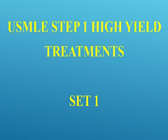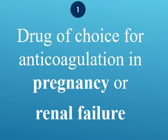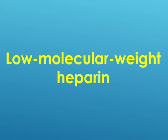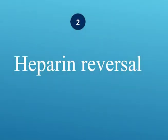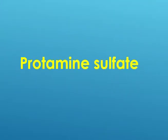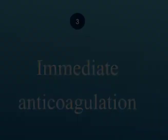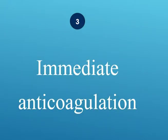Welcome to USMLE High Yield Treatment 1. What is the drug of choice for anticoagulation in pregnancy or renal failure? Low molecular weight heparin. How do you reverse heparin toxicity? Use protamine sulfate. What is the immediate anticoagulation? Heparin.